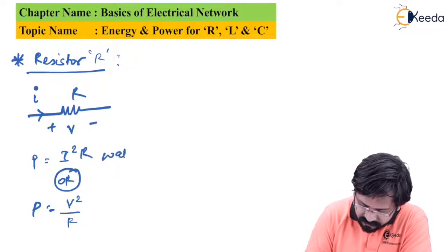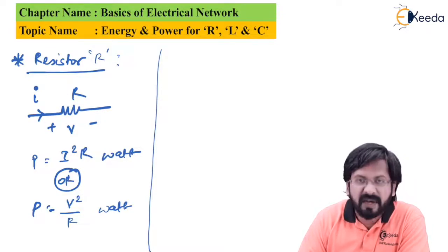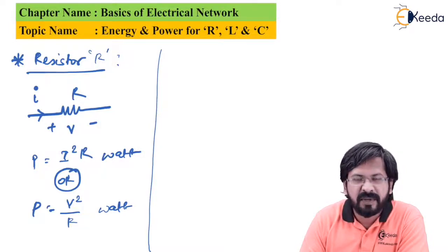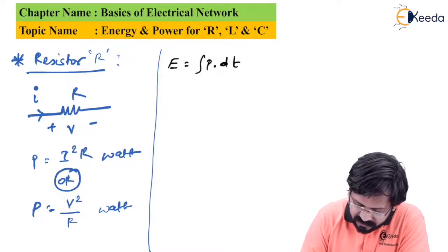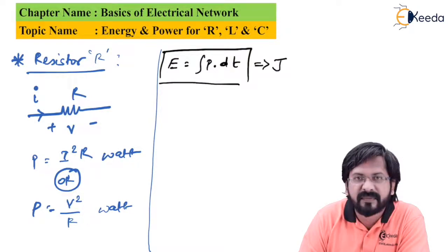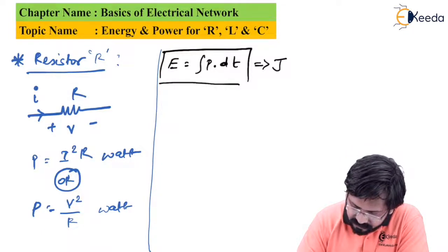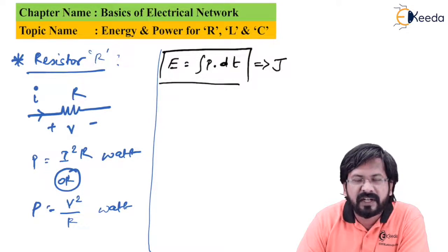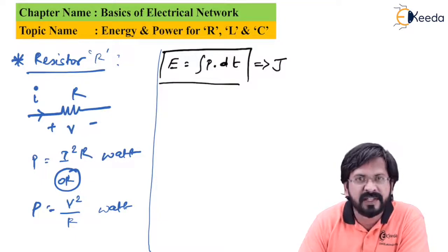The unit is Watts. Once we have power, we can calculate energy very easily because energy is the integration of P over dt. So energy and power have this standard relation. The unit for energy is joules. We generally denote energy by W instead of E, because in electrical circuits E is used for EMF. So let us replace E with W.